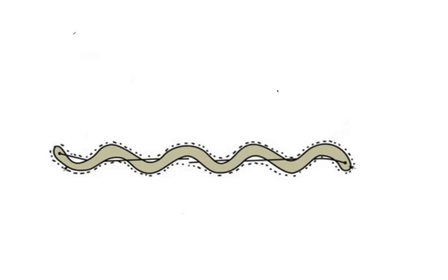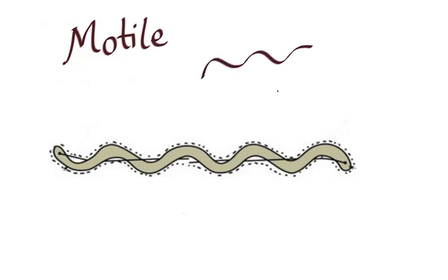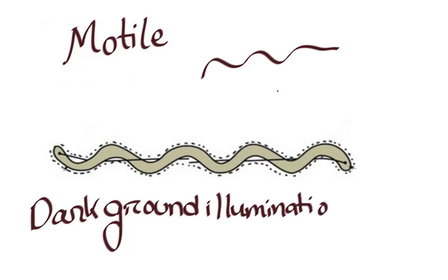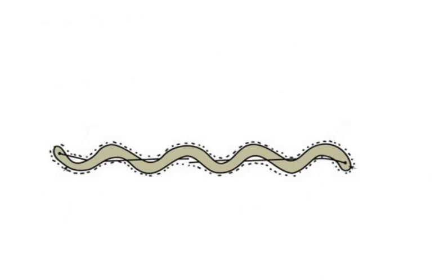The organisms are actively motile. They show rotatory and forward movement like a corkscrew around their endoflagella. This movement can be seen by ordinary microscopy only through dark ground illumination, but it cannot be seen under immunofluorescence microscopy as the spirochete is already dead.